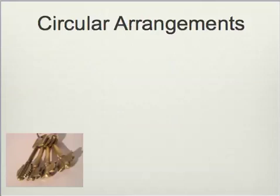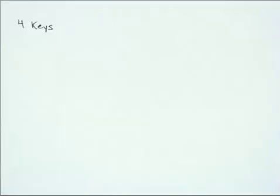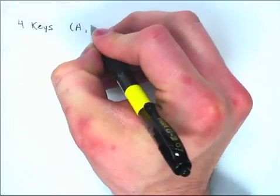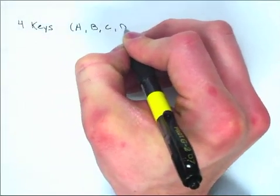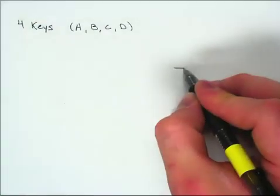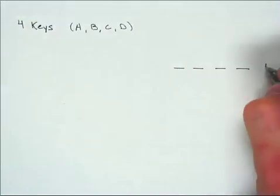The final type of arrangement we're going to look at is the circular arrangement — not quite linear, but circular, and how does that affect things? For example, how many ways are there to arrange four keys on a plain key ring? We have four different keys — let's call them key a, b, c, and d. If I were thinking about this in a linear way, I would have four different spots and four factorial different arrangements.